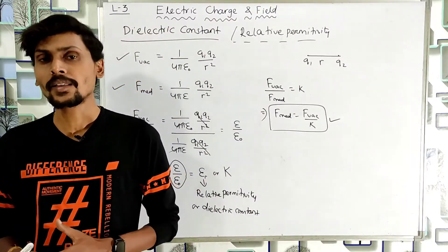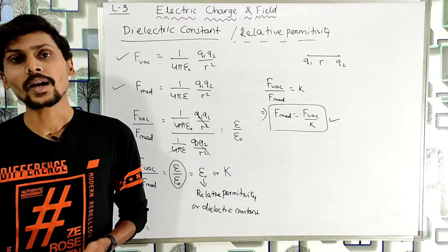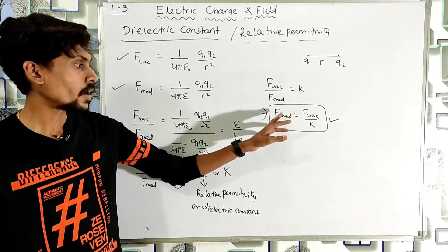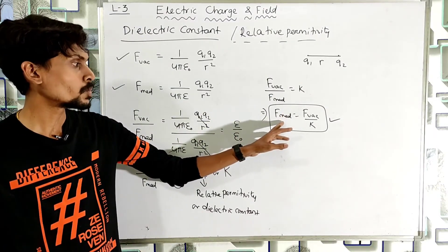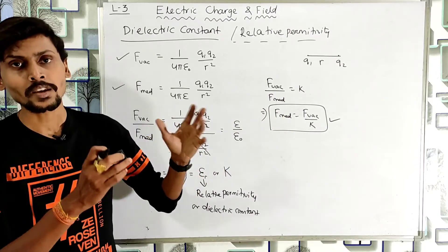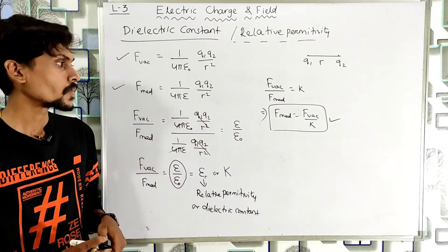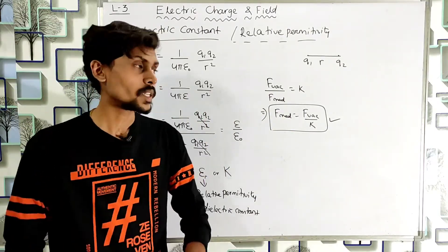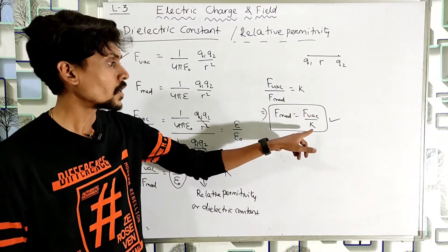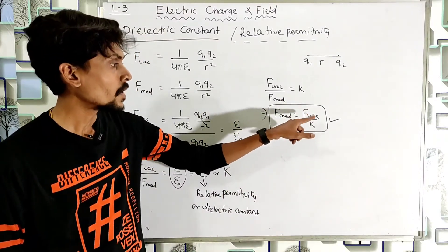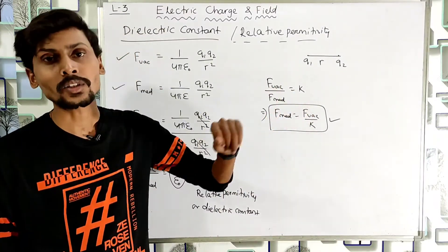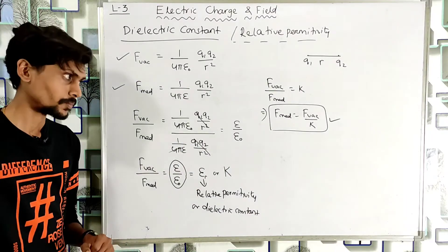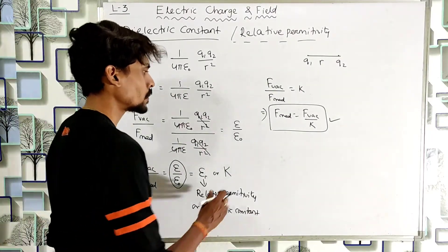The dielectric constant has no unit or dimension. If we know the force between the same two charges in vacuum and we know the dielectric constant of the given medium, we can calculate the force in that medium using F_medium = F_vacuum/K.